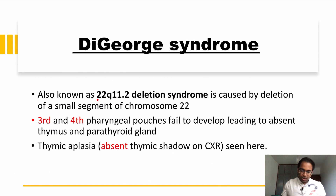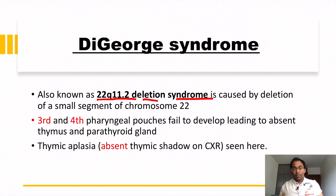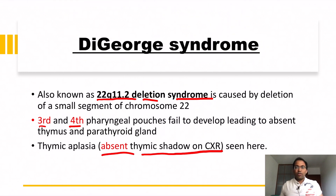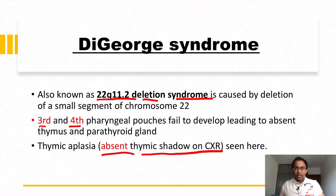DiGeorge syndrome is also known as 22q11.2 deletion syndrome. It involves underdevelopment of the third and fourth pharyngeal pouches. We also see an absent thymic shadow on chest X-ray, because the thymus is either hypoplastic or aplastic.